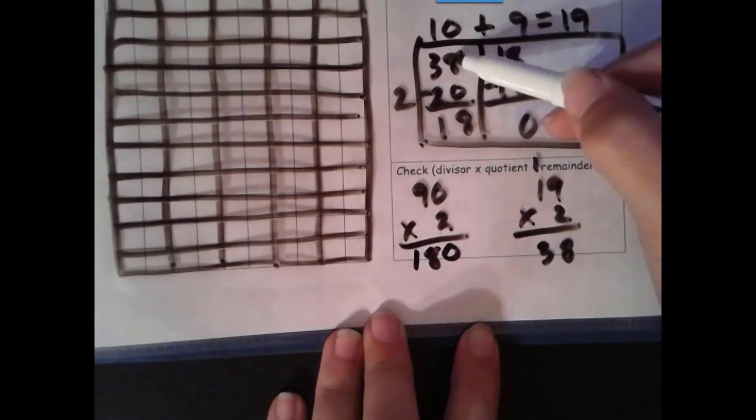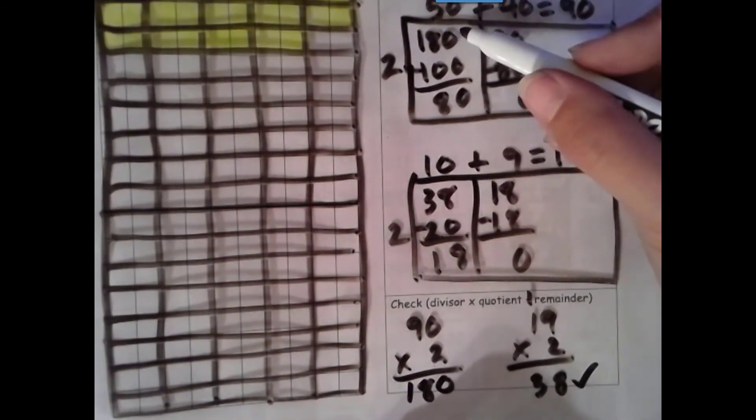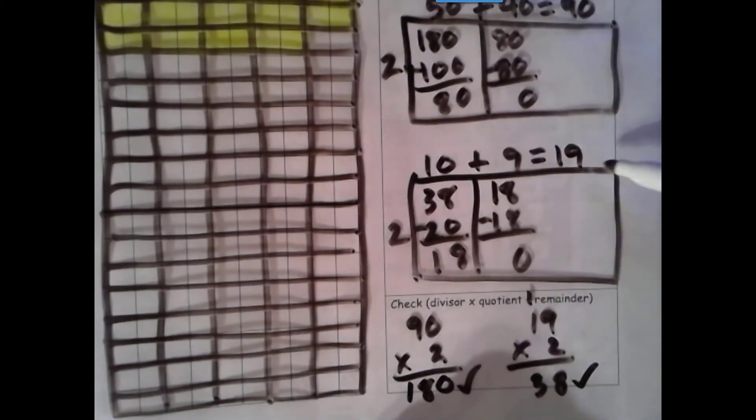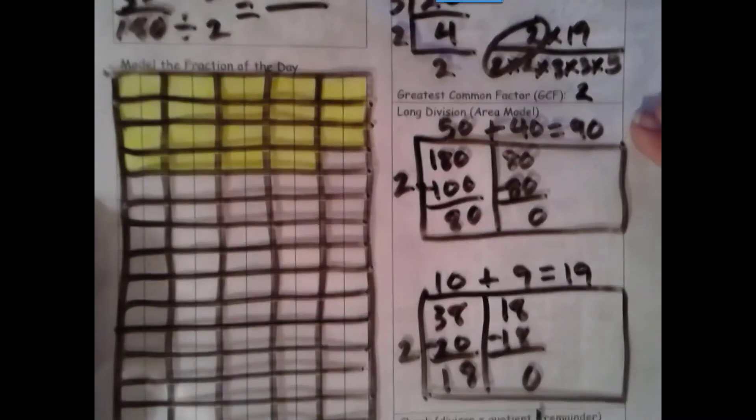2 times 9 is 18. 2 times 1 is 2 tens plus 1 more tens is 3 tens. Okay, 38, that matches our dividend here. Check. 180 matches our dividend up here. Check. So our numerator is definitely 19, and our denominator is definitely 90.